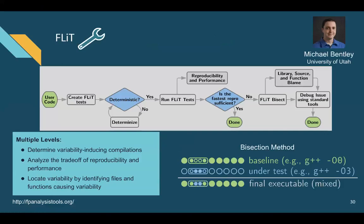In the previous example, we identified the root problem in a single function using delta debugging, but this process was very manual. There is a tool called FLIT that performs this analysis more automatically. FLIT provides a method to analyze compiler-induced variability. It can determine compilation options that influence floating-point variability, analyze the trade-off of reproducibility and performance for a given compiler, and identify files and functions causing variability due to compilation — using a bisection search algorithm rather than delta debugging. The main developer is Mike Bentley at the University of Utah, and you can find a link to this tool at fpanalysistools.org.